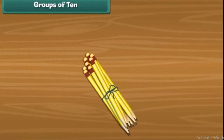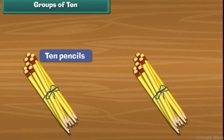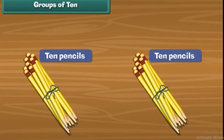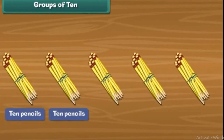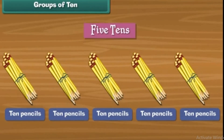Groups of ten. Look at this bundle of pencils — there are 10 pencils in this bundle. A collection of 10 objects is called tens. Here is one more bundle; there are 10 pencils in it as well, so we have two tens. Here are some more bundles of pencils; each bundle has 10 pencils. Let us count: 3, 4, 5. Therefore, we have five tens.